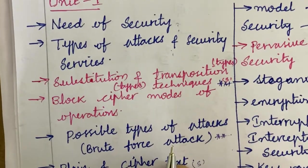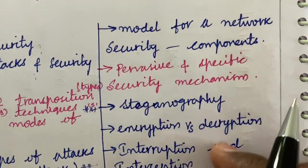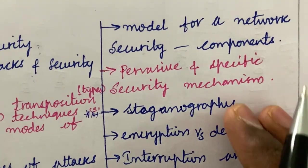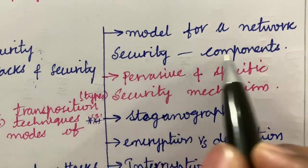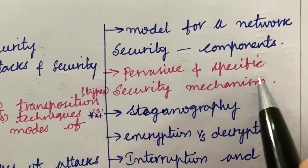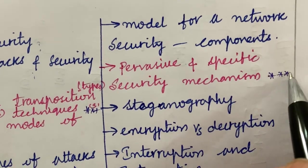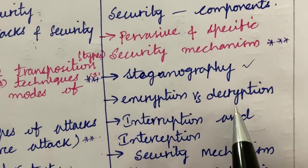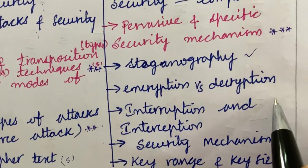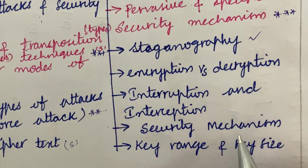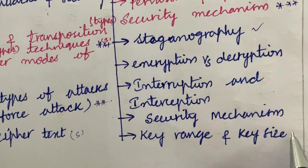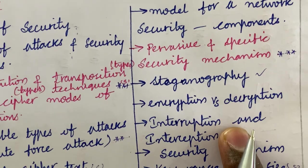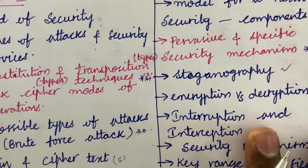From this part we can expect questions in 2A and 2B. The first question set covers short questions. The model for network security and its components, as well as pervasive and specific security mechanisms, is a very important question. Steganography — what is steganography, explain — may be a 2-mark question. Encryption versus decryption may be a 2 or 3 mark question. Interruption versus interception differences, security mechanisms, key range, and key size may also be short questions. We can expect short questions as well as 3A and 3B from this part.